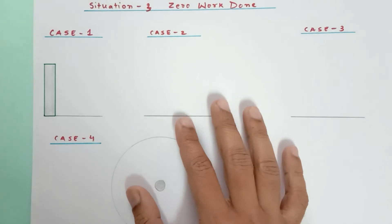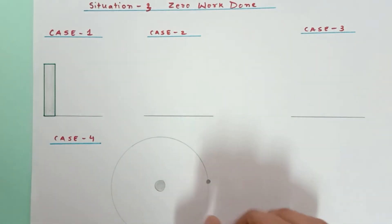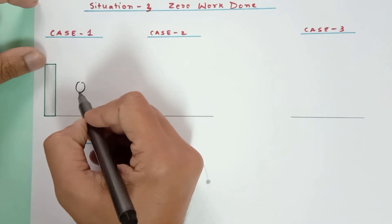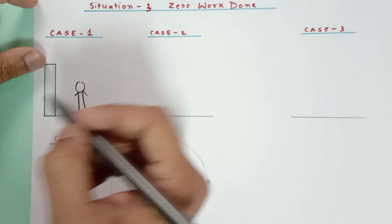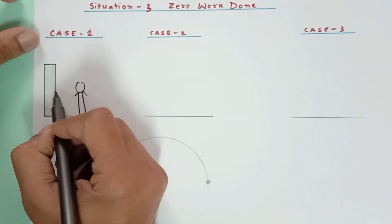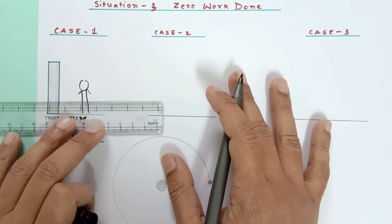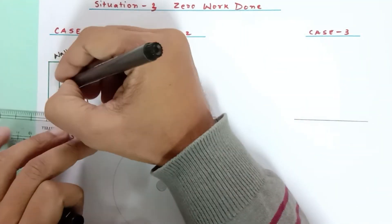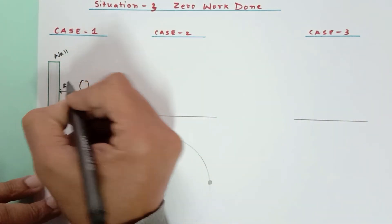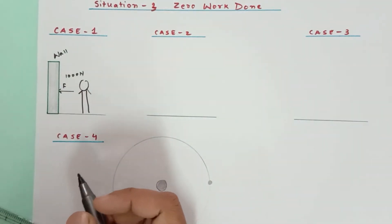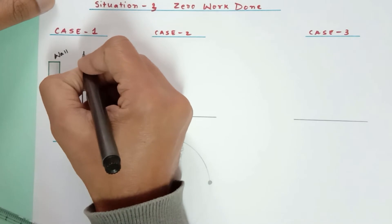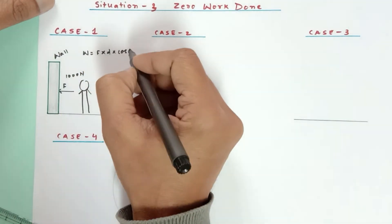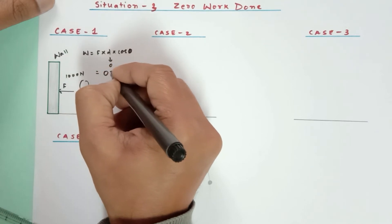Now let us discuss zero work done cases. First: a person exerts a force of 1000 N on a stationary wall. The wall does not move, so displacement d = 0. Work done = F × d × cosθ = 0 since d = 0.